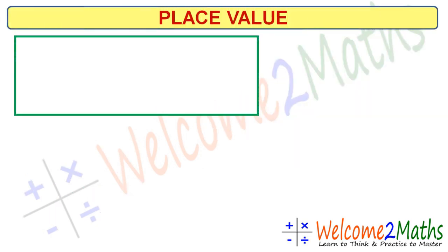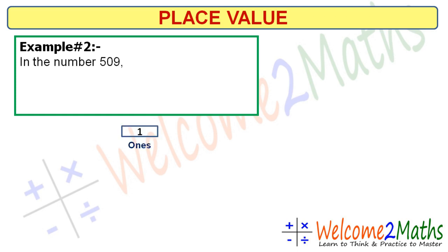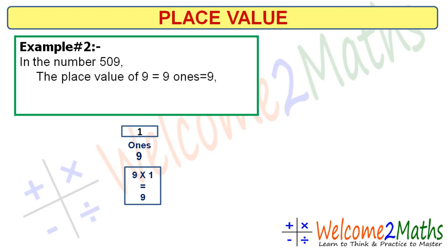Now let's see another example of place value. Here is the number 509. We will see the place value of its digits. Let's start with the ones place. 9 is at the ones place, so the place value of 9 is 9 × 1 = 9, that is 9 ones.